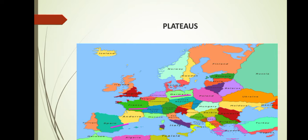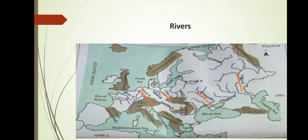You can identify the countries in Europe — Germany, France and Spain. Eastern Europe is a vast plain which stretches across several countries like Russia, Ukraine, Poland, Belarus, etc. Look at the physical map of Europe.